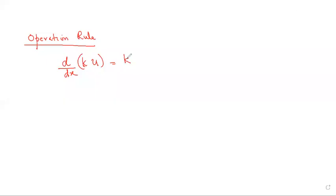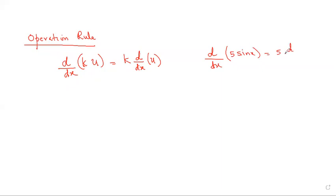For example, the derivative of φ·sin(x) — remove the constant outside and differentiate the function. So your answer is φ·cos(x).